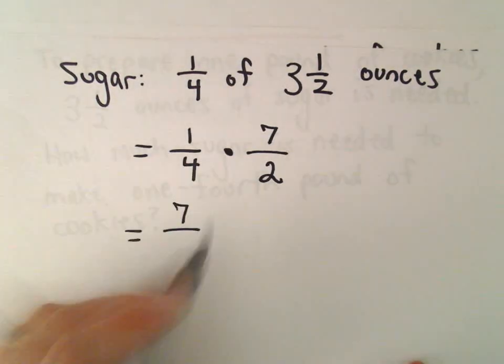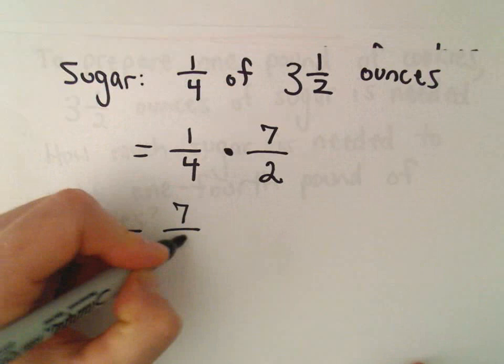One times seven is seven. Four times two is eight.